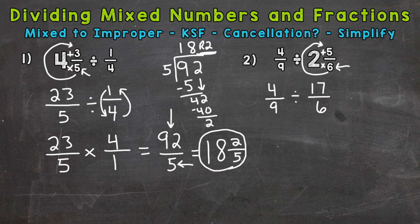Keep, switch, flip. Always keep the first fraction. Switch to multiplication. And flip. So we have 6 over 17 there.